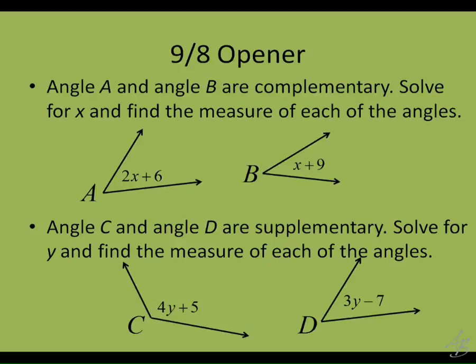In these problems, what we're trying to do is solve for the variable, and then ultimately figure out the actual measure of each of the four angles. For the first one, it says angle A and angle B are complementary. So what does that tell us about angle A and angle B?